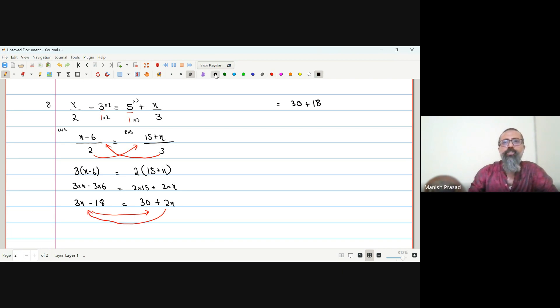And 2X will come this side to LHS. So, LHS, it will become what? 3X minus 2X. What is 3X minus 2X? 1X.